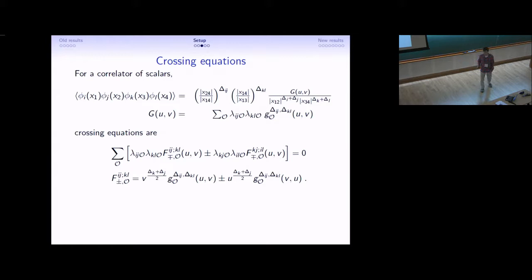They have indices i, j, k, and l relating to these operators. And these need to be allowed to run over all of the four-point functions that we're considering in the crossing symmetry equation.